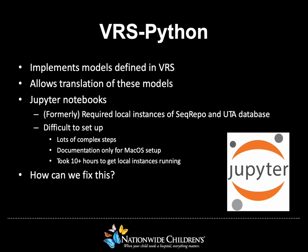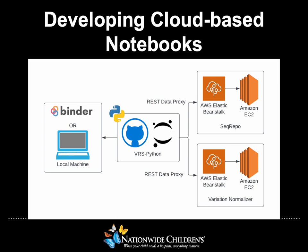So, what do we do to fix it? To overcome the barriers for introduction to VRS, we developed cloud-based notebooks to educate potential adopters. We eliminated the need for users to have locally running instances of SeqRepo and UTA by hosting those dependencies on AWS Beanstalk apps on EC2 instances. VRS Python now uses a REST data proxy to retrieve information from SeqRepo and an additional REST data proxy to retrieve the needed information from UTA from our lab's variation normalizer. VRS Python's Jupyter notebooks are hosted by a third party called Binder, where a user can go directly to and explore the notebooks with no installation required.